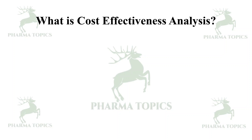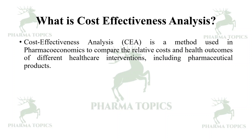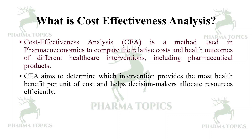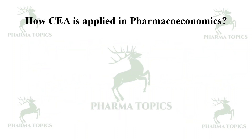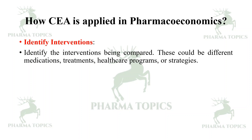Next is Cost-Effectiveness Analysis (CEA). CEA is a method used in pharmacoeconomics to compare the relative costs and health outcomes of different healthcare interventions including pharmaceutical products. CEA aims to determine which intervention provides the most health benefit per unit of cost and helps decision makers allocate resources efficiently. Unlike Cost-Benefit Analysis, which quantifies benefits in monetary terms, CEA quantifies outcomes in natural units such as life years gained or symptom-free years, and compares them to costs.